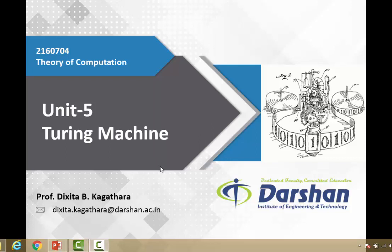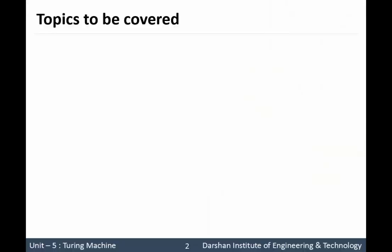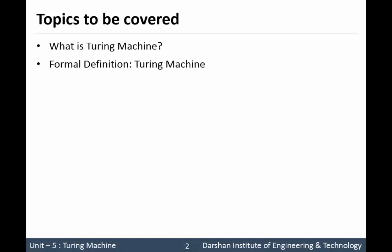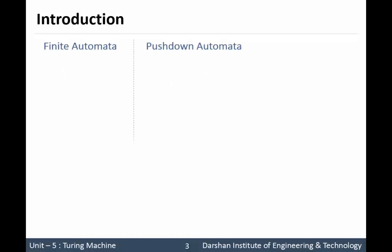Hello everyone. In this video lecture we will discuss our next unit, that is the Turing machine, in depth. We will study what a Turing machine is, the formal definition of it, how to design a Turing machine, the universal Turing machine, and lastly the Church-Turing thesis. Till now we have already seen finite automata and pushdown automata, and we have also studied the class of languages they accept.